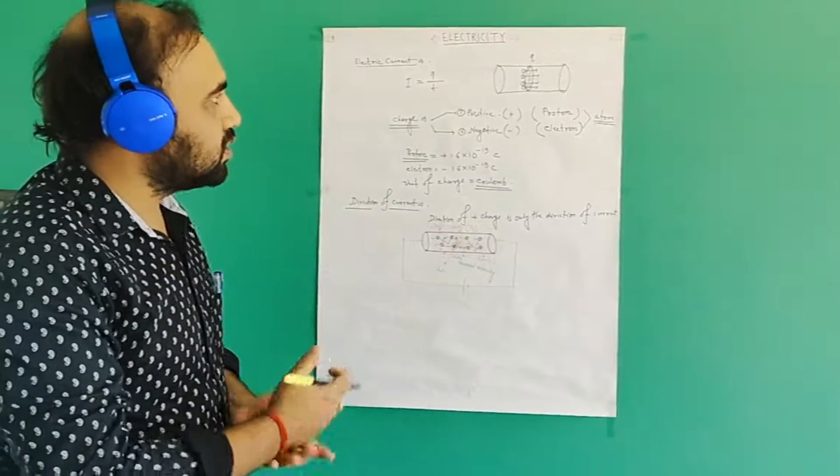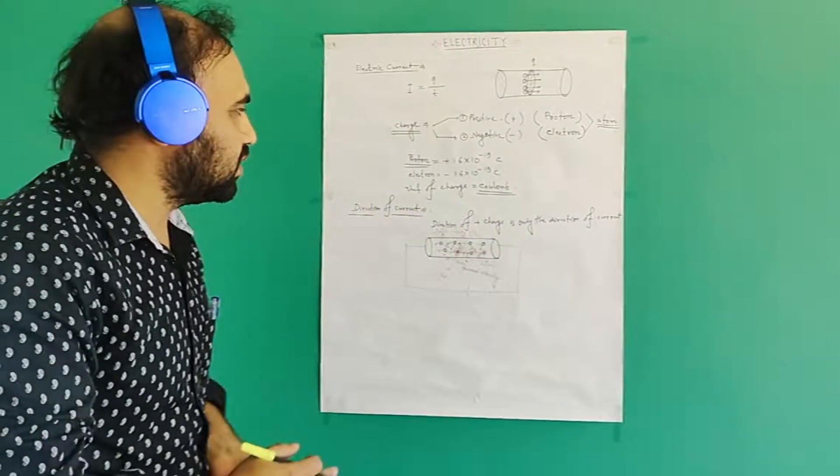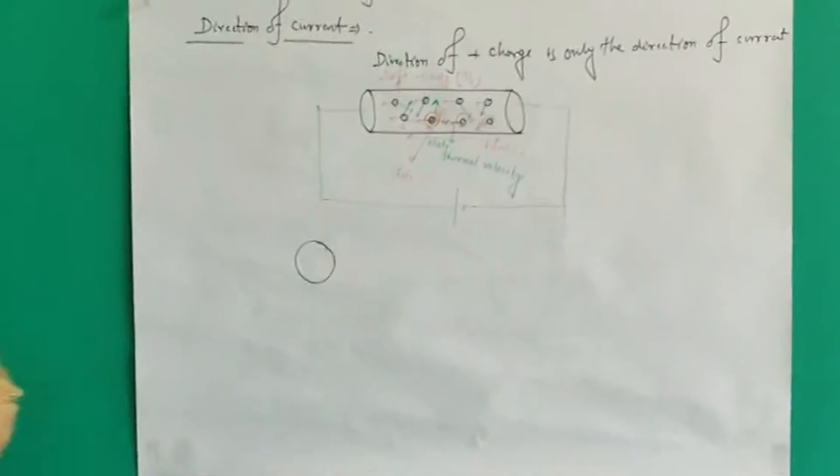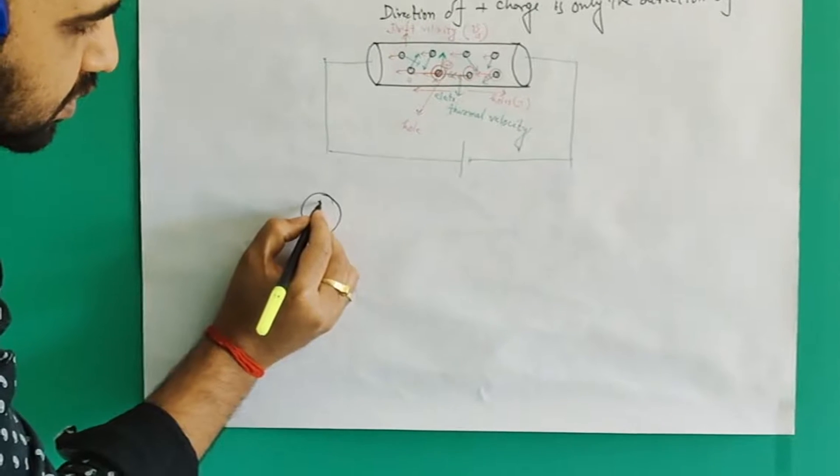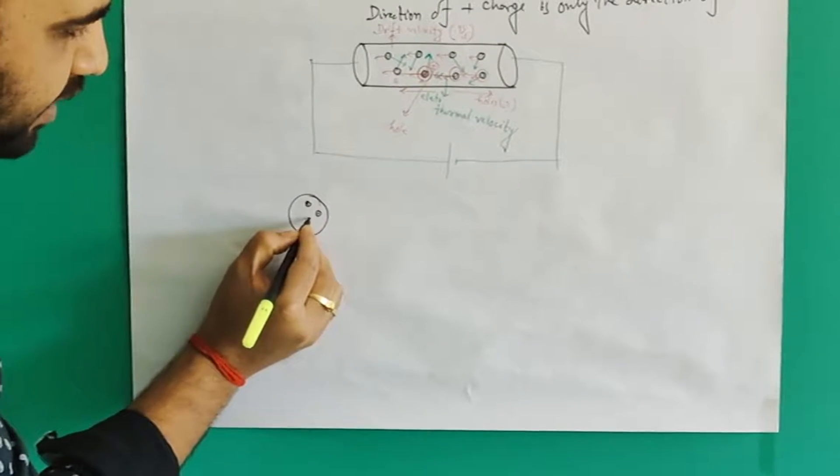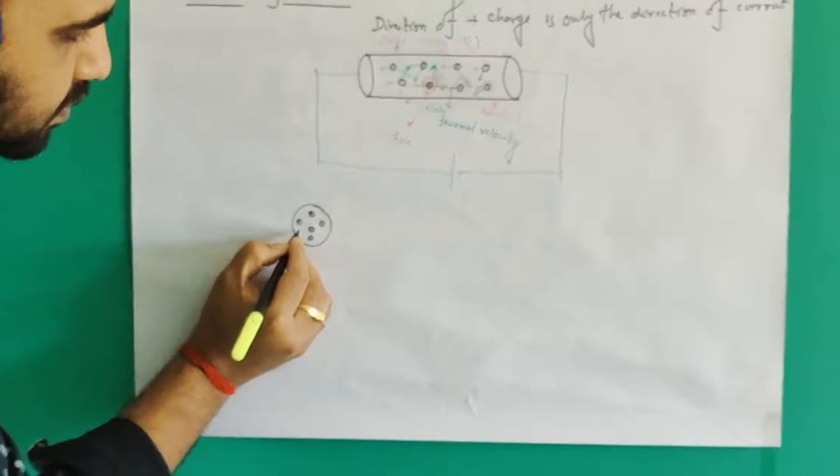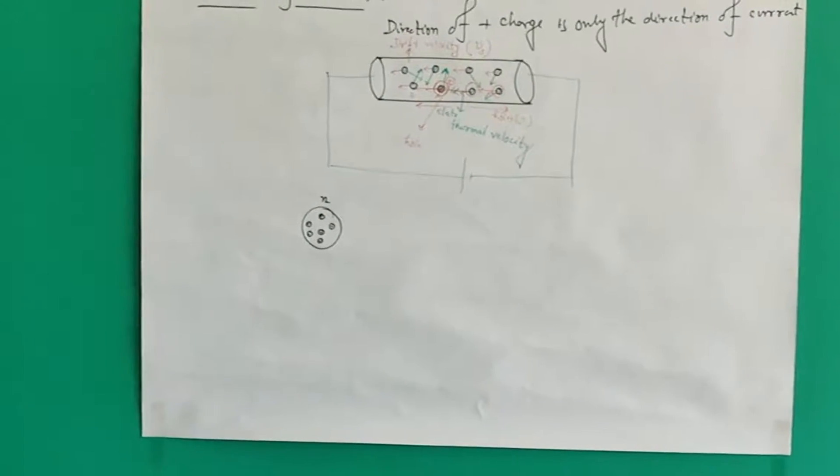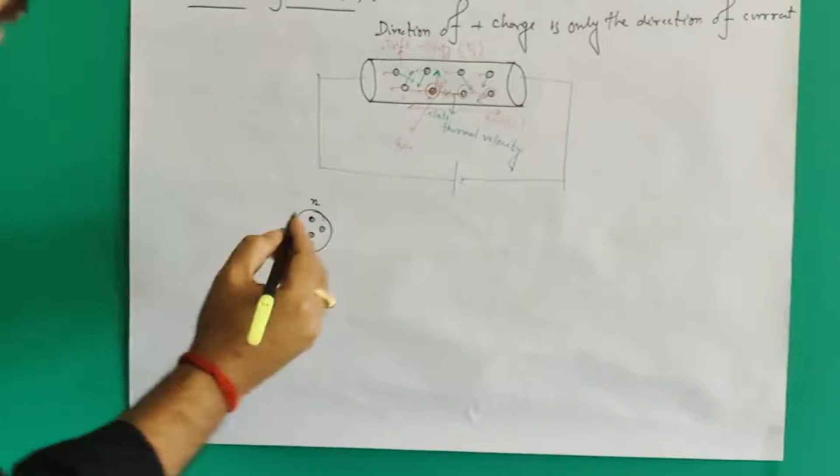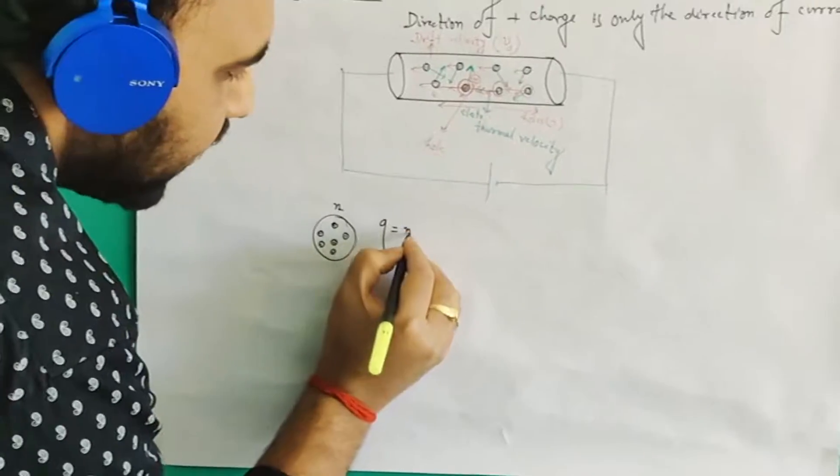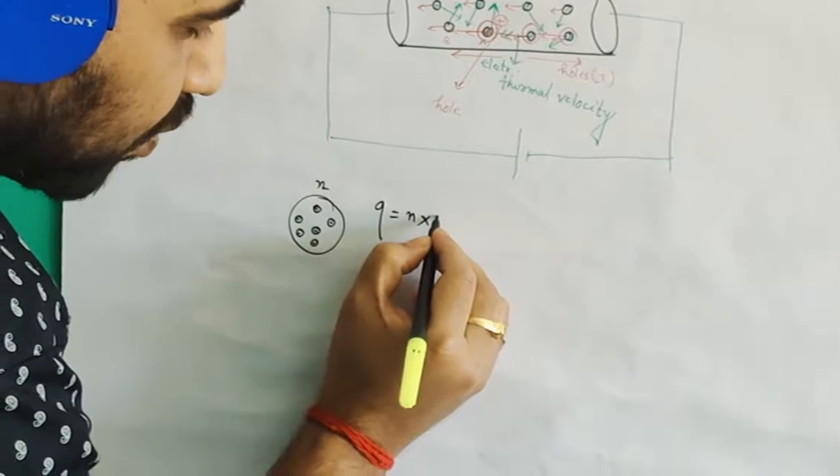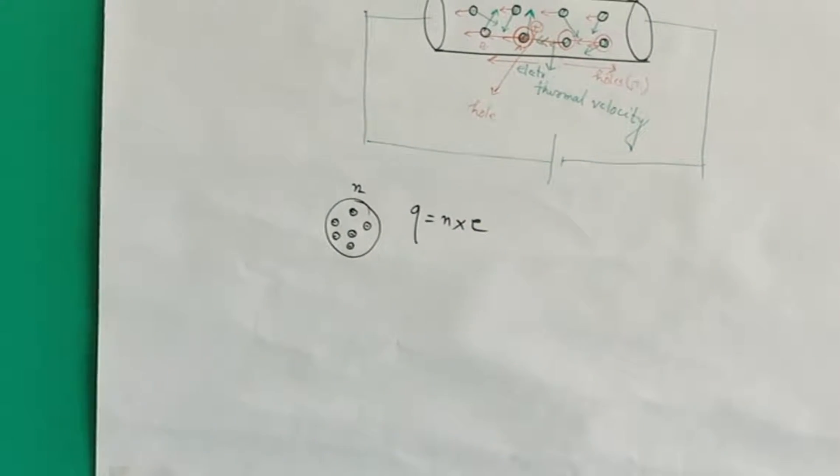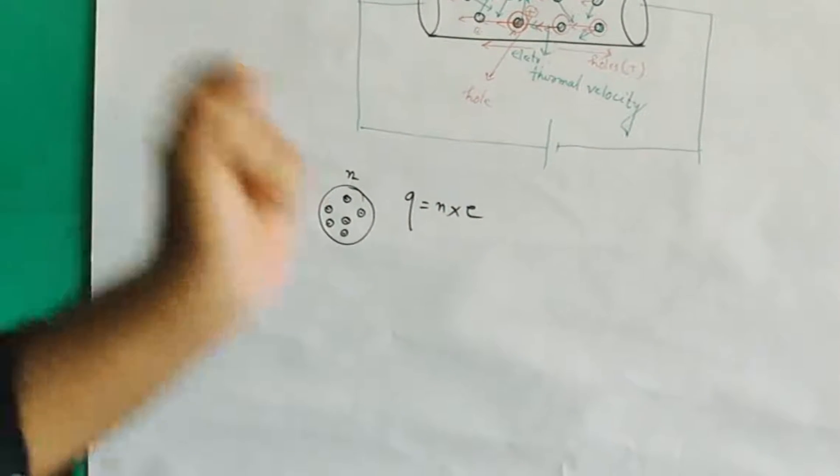If we consider an object within which n number of electrons is there, then what will be the charge of this object? The charge will be n into e, where e is the charge of one electron. So one can easily say Q = n×e.